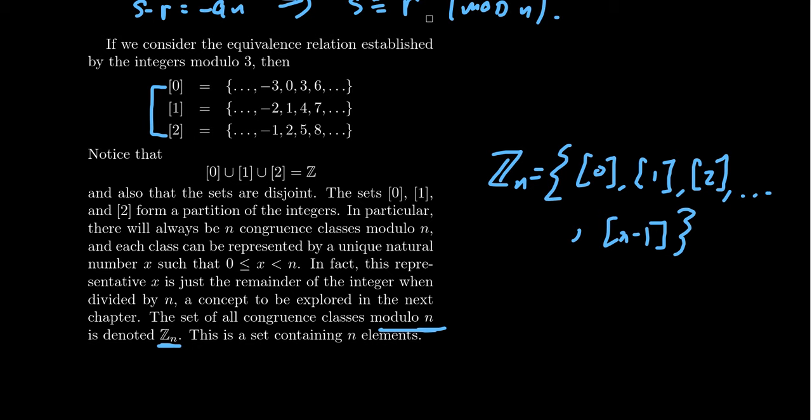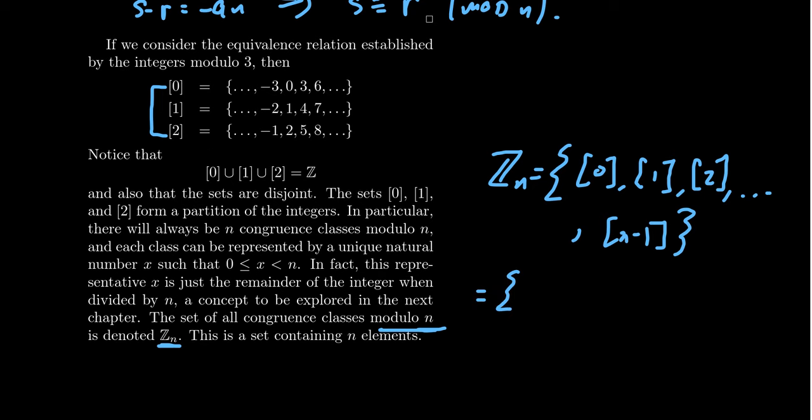Now I should mention that some people, when they talk about Z_n, we get a little bit lazy and we don't write the equivalence class. Instead, some people write this as - this is somewhat of an abusive notation - 0, 1, 2, 3, up to n-1. They only write the representative and not the class. That's not always the best mathematics because Z_n is the set of equivalence classes, not the set of integers 0 through n-1.